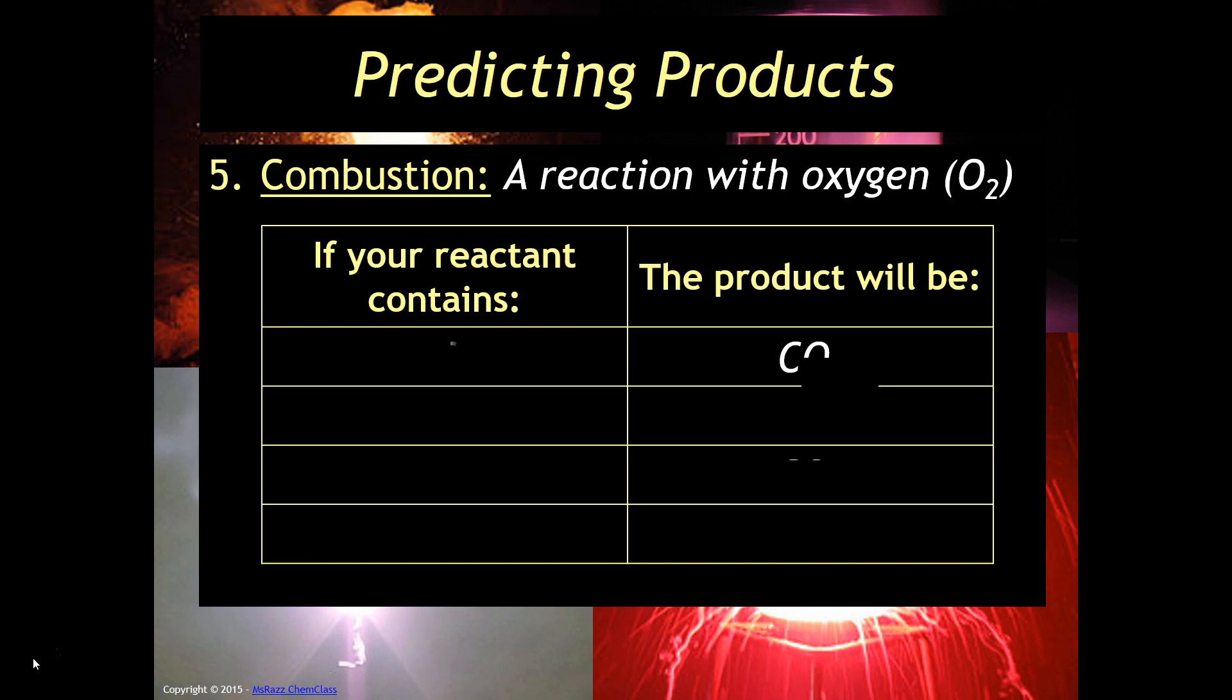For example, if your reactant contains carbon then the product automatically is going to be CO2. If your reactant contains hydrogen you're automatically going to get H2O. If it contains sulfur then you're automatically going to get SO2 and if it contains nitrogen you're automatically going to get N2. So let me show you how this works.